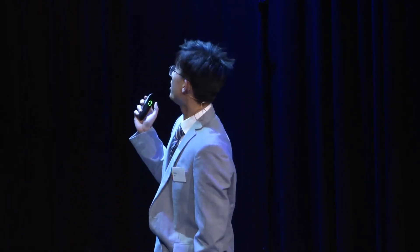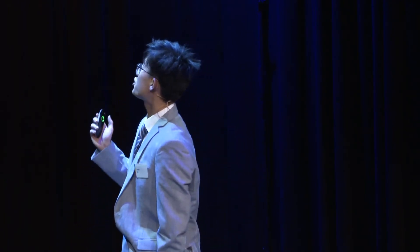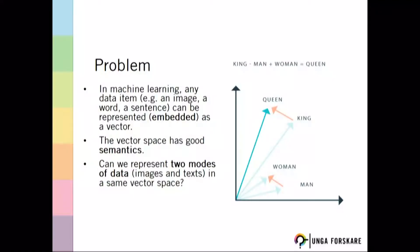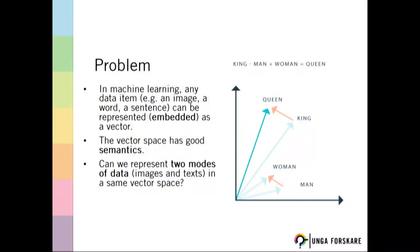Machine learning answers this question using a concept called representation learning. In representation learning, we represent each data item — such as an image, a text, or an audio wave — using a vector in mathematics, or to be embedded as a vector.